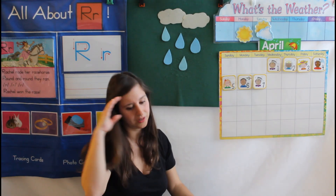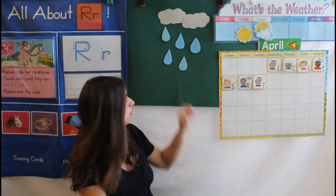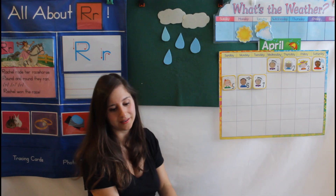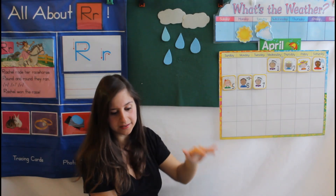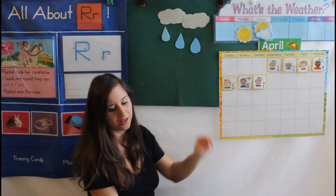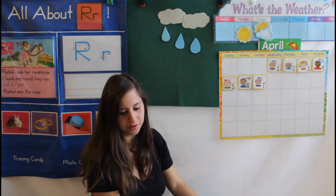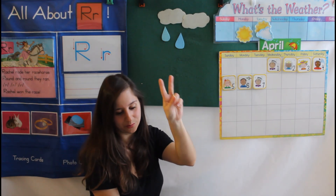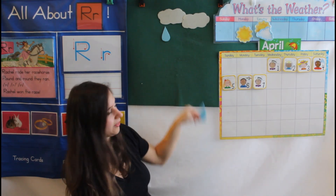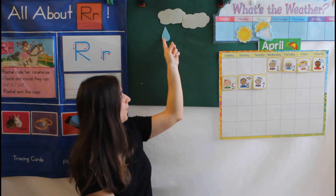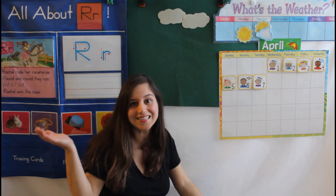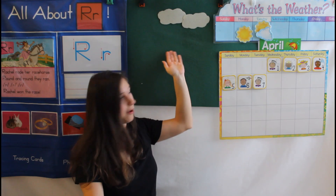Five little raindrops. Now let's see if we can count backwards. Five little raindrops plopping on the floor. One plopped away, and then there were four. One, two, three, four. Four little raindrops dripping on the trees. One dripped away, and then there were three. One, two, three. Three little raindrops splashing on my shoe. One splashed away, and then there were two. One, two. Two little raindrops starting to run. One ran off, and then there was one. One little raindrop drying in the sun. It dried all up, and then there were none. Another word for none or nothing is zero. Now we have zero raindrops.